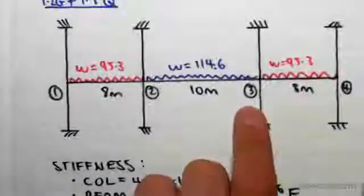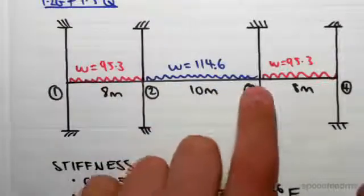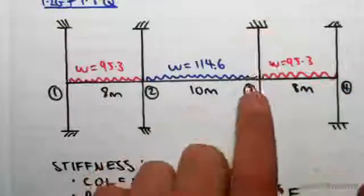Joint number three we have from three to two, from three to four, column upper and column lower.